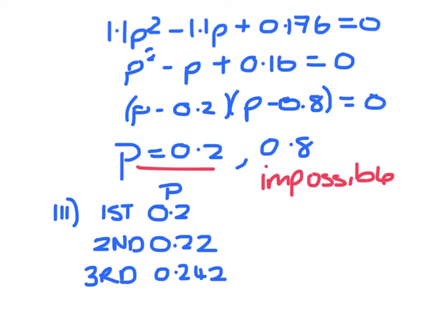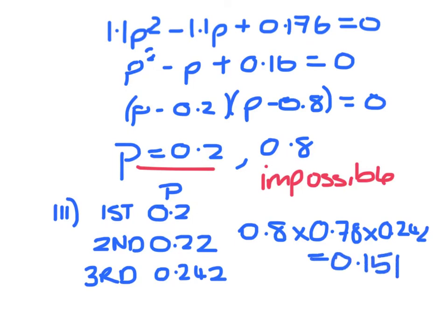So the probability that he passes at his third attempt will be didn't pass first, didn't pass second, but did pass third. Which is 0.151, and I've given that to three significant figures.